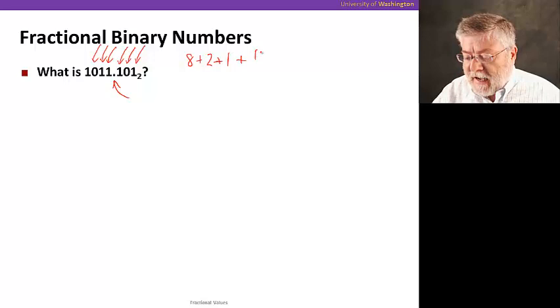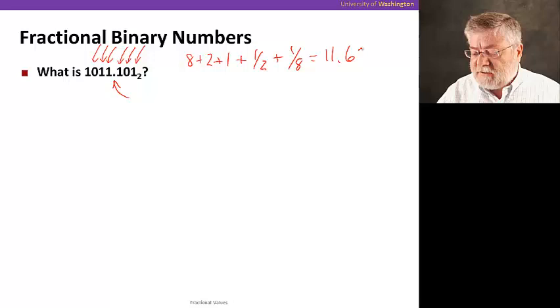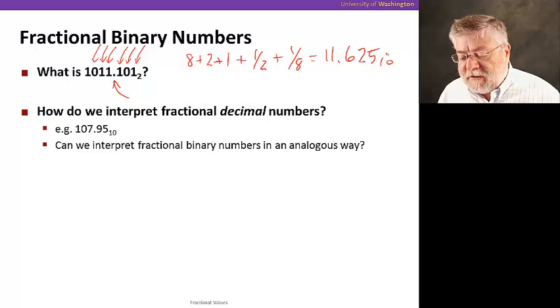So that's the number eleven. And then we have a half and an eighth. Not a fourth, because that's a zero. So in this case, this number comes out to be eleven point six two five in decimal.